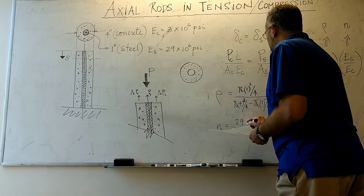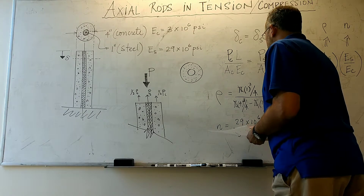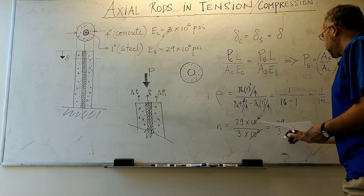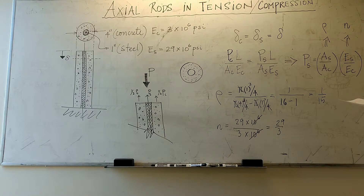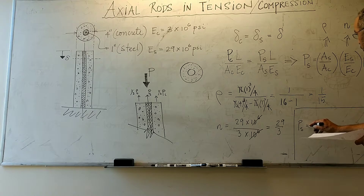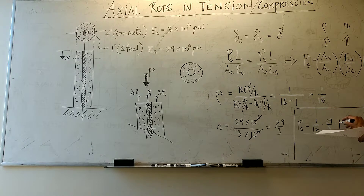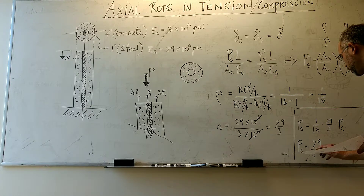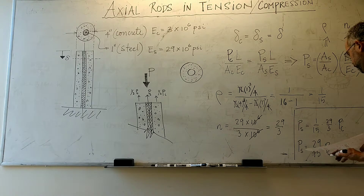The modular ratio N is the elastic modulus of steel, 29×10⁶, divided by the elastic modulus of concrete, 3×10⁶. The 10⁶ terms cancel, giving N = 29/3. Therefore the load in the steel equals (1/15) × (29/3) × P_concrete, which gives a ratio of 29/45 × P_concrete, slightly over half.